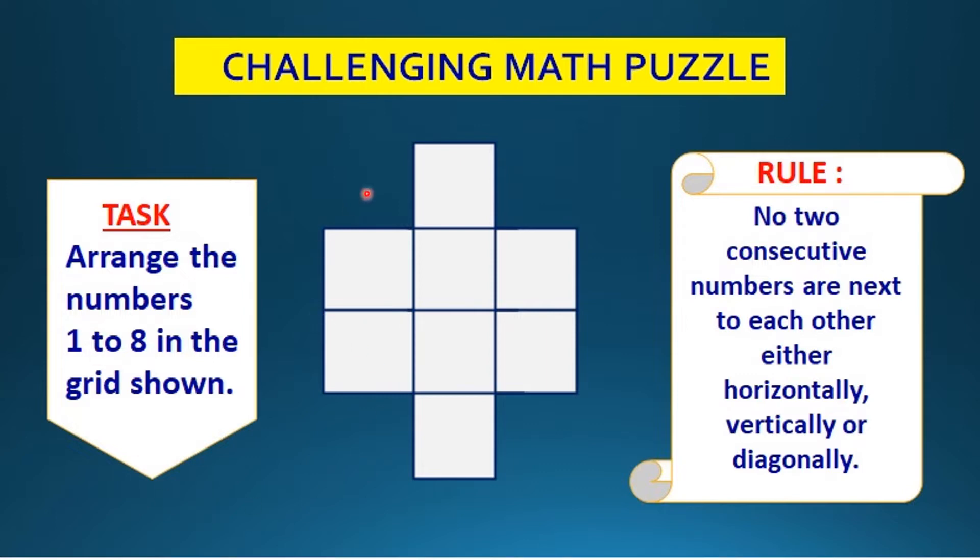And the puzzle is, you can see here there is a grid with 8 boxes. In these 8 boxes, you have to arrange or place the numbers 1 to 8.